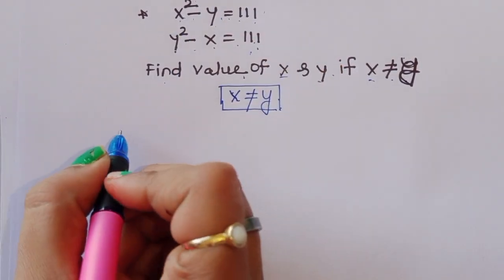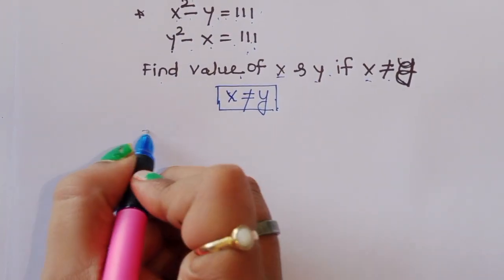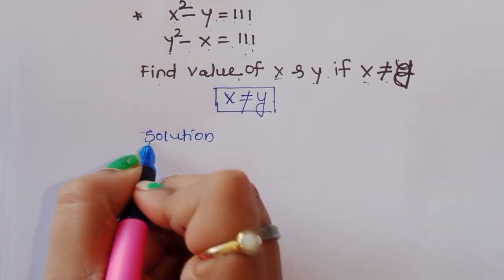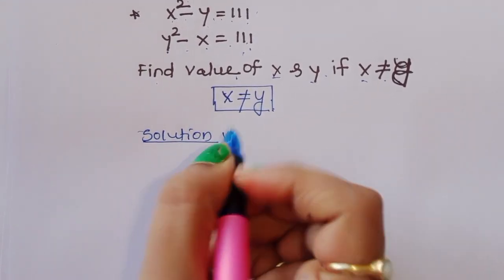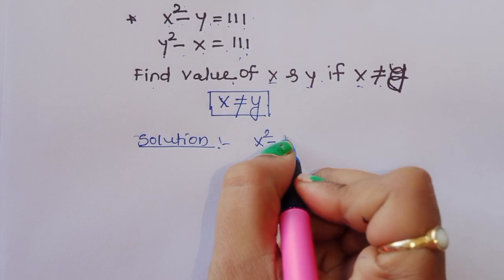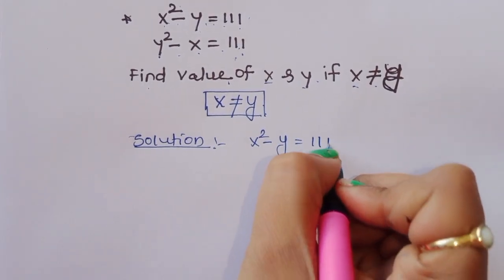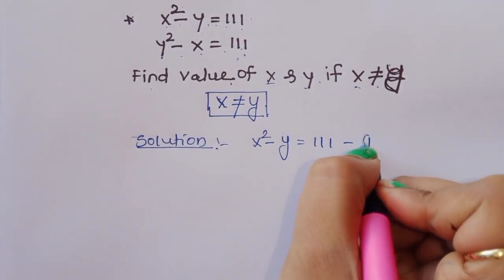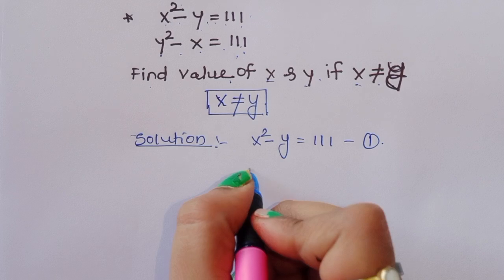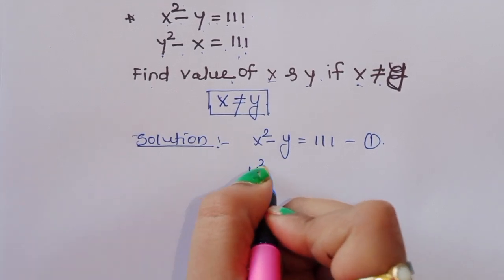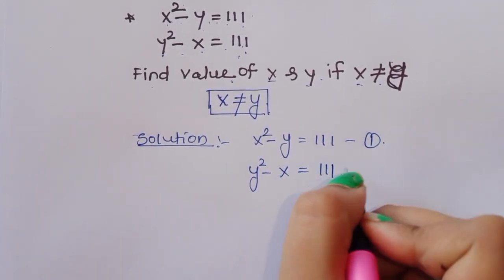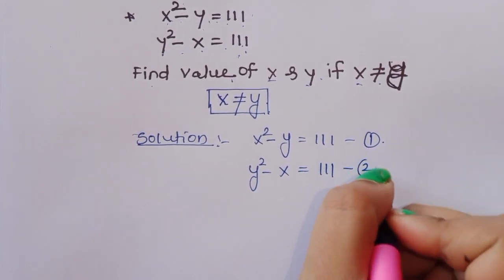Let's start the solution. Equation 1: x squared minus y is equal to 111. Equation 2: y squared minus x is equal to 111.